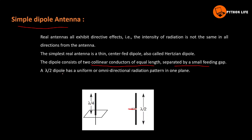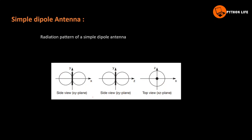The lambda-by-2 dipole has a uniform or omnidirectional radiation pattern in one plane. Lambda by 2 dipole produces omnidirectional radiation. Lambda by 4 is also referenced. The wavelength of a simple dipole has a characteristic radiation pattern.